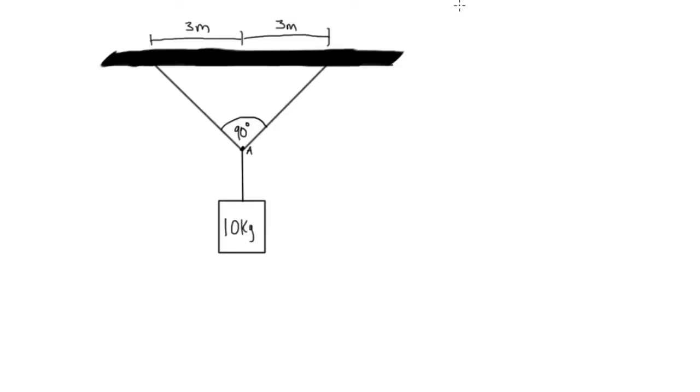Alright, something that is really helpful to us in statics is symmetry, and you'll see in this problem we're going to have two ropes here pulling up and one rope pulling down about this point A. Imagine there's a little ring or something here connecting them all.